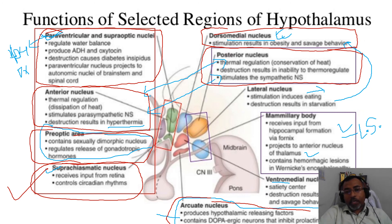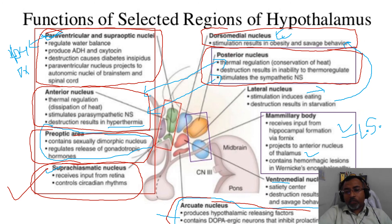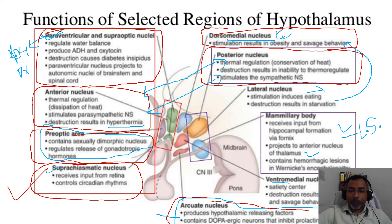The lateral nucleus of the hypothalamus stimulates and induces eating, and its destruction results in starvation. The mammillary body receives input from the hippocampal formation via the fornix, and projects to the anterior nucleus of the thalamus — making it an important part of the limbic system. The ventromedial nucleus is also called the satiety center, and its destruction results in obesity as well as savage behavior.